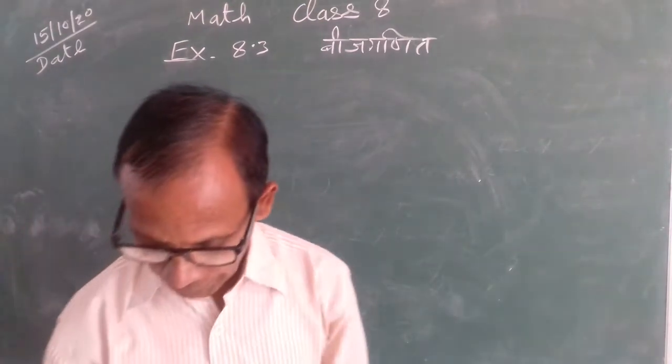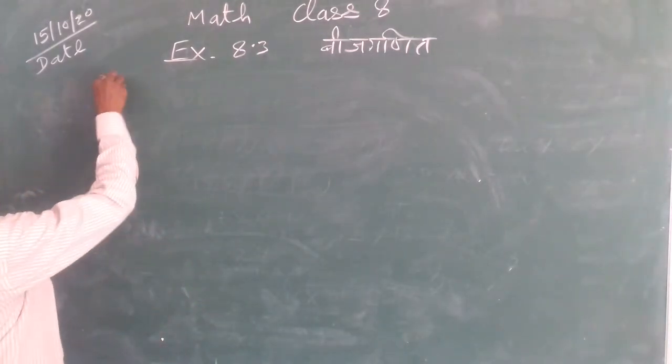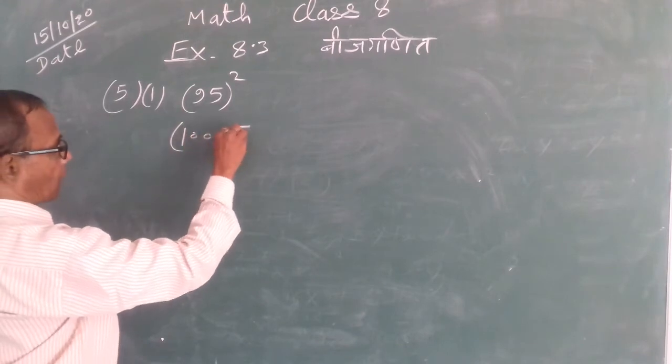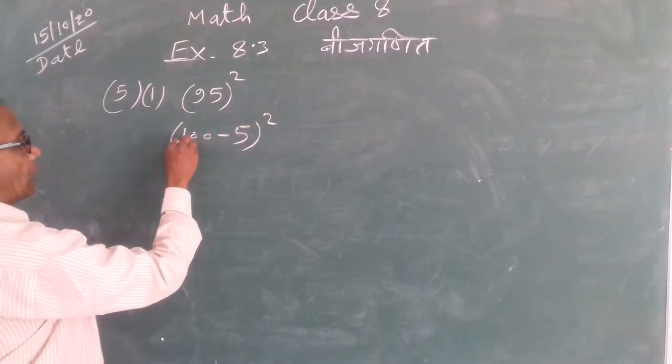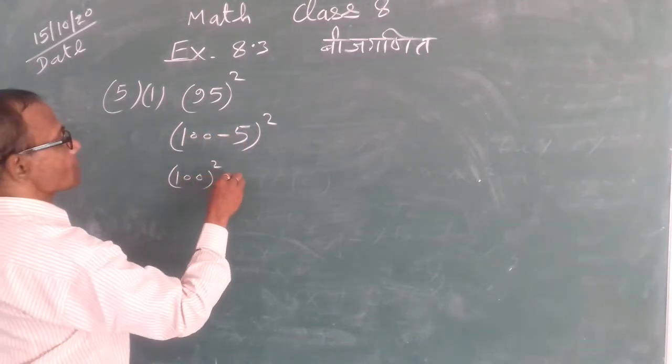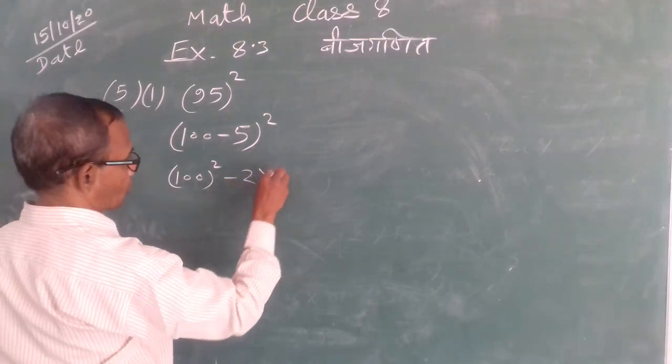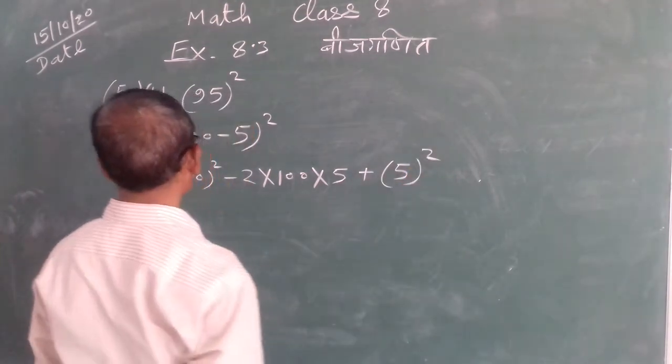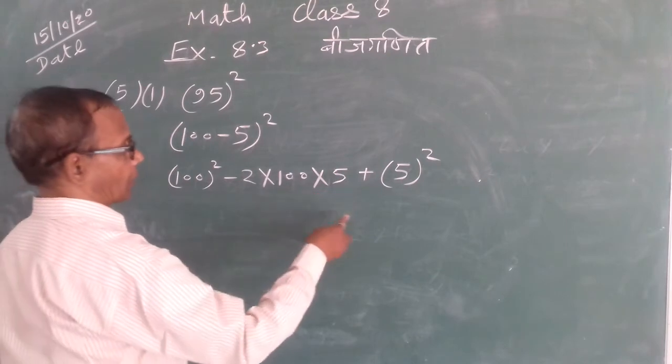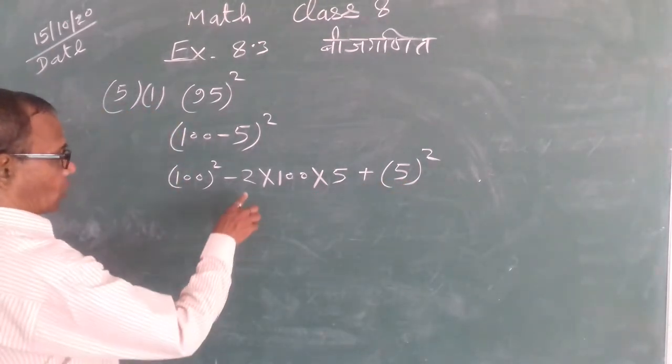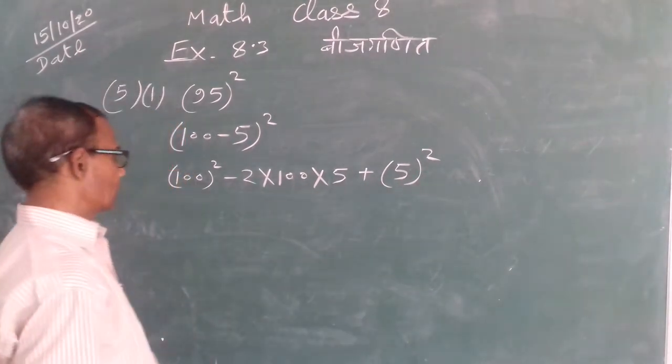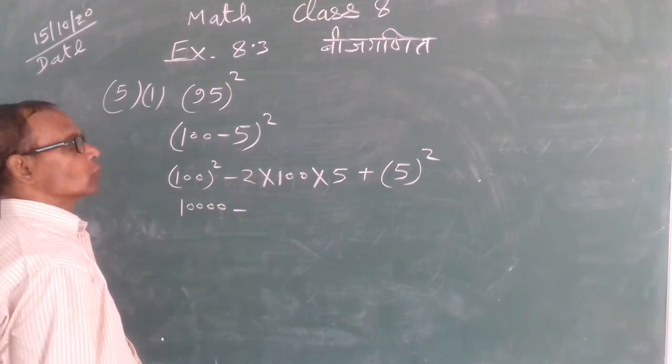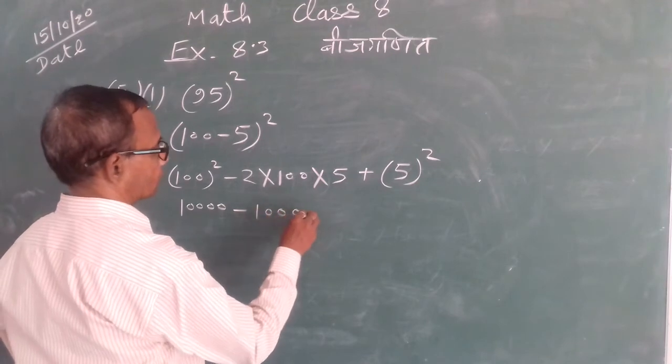Next question: 95². We can write 95² as (100 - 5)², which is (a - b)². Using the formula a² - 2ab + b², we get 100² - 2 × 100 × 5 + 5².